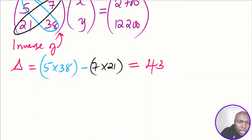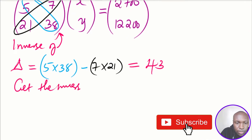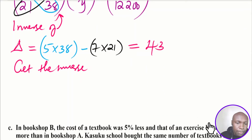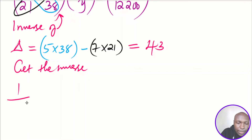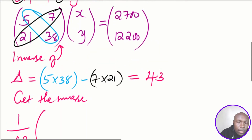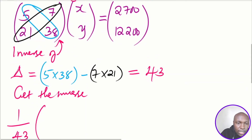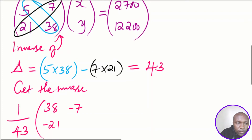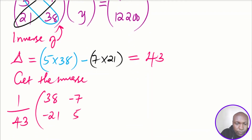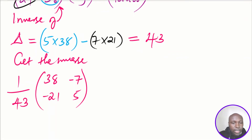After getting the determinant, we find the inverse by taking 1 over the determinant — that is, 1 divided by 43 — and then interchanging the diagonal elements and negating the off-diagonal elements. So the matrix becomes [38, -7; -21, 5], giving the inverse as (1/43) × [38, -7; -21, 5].